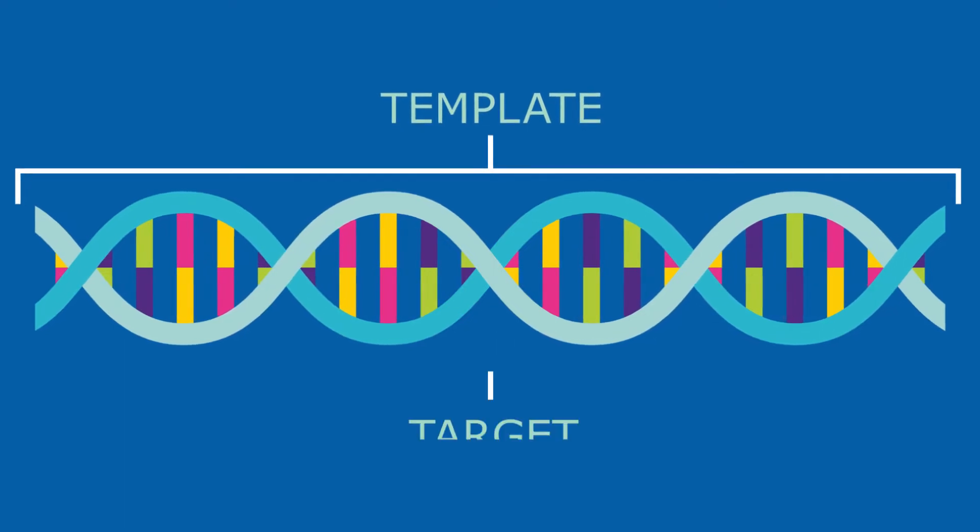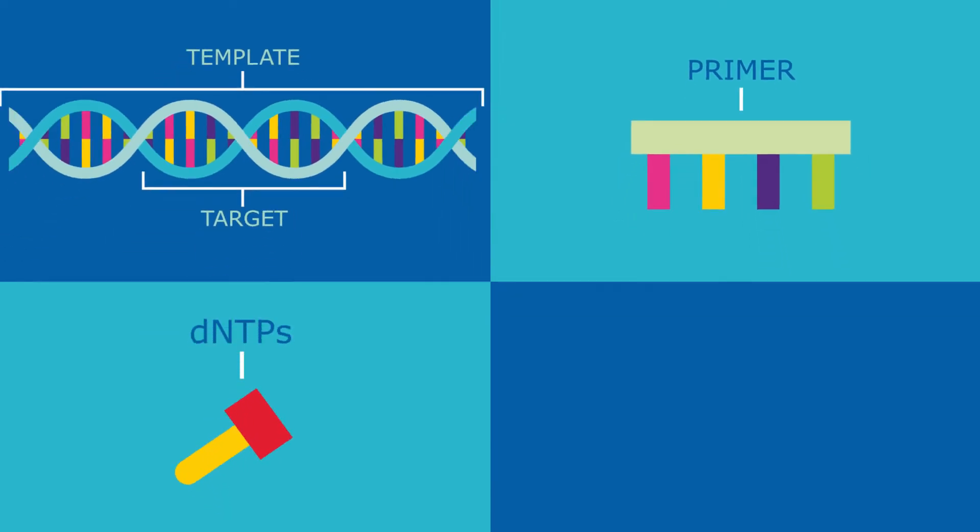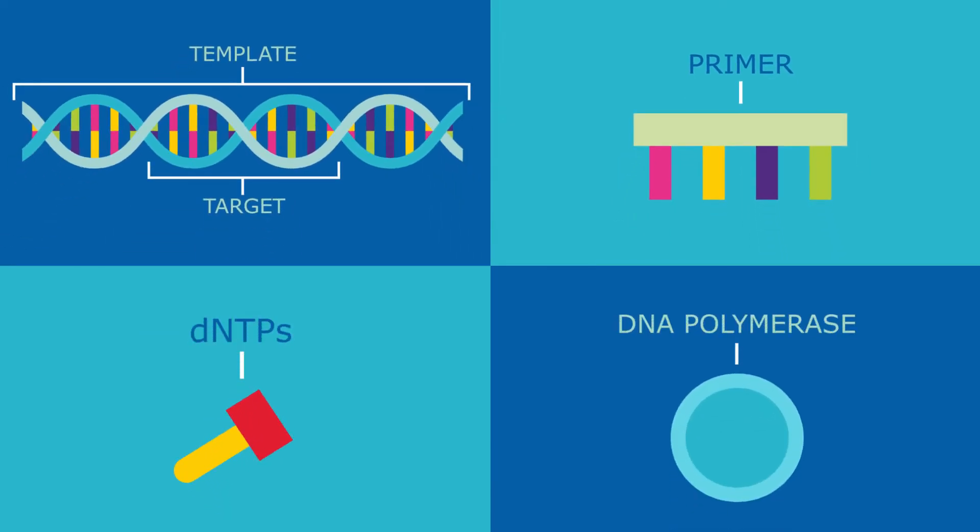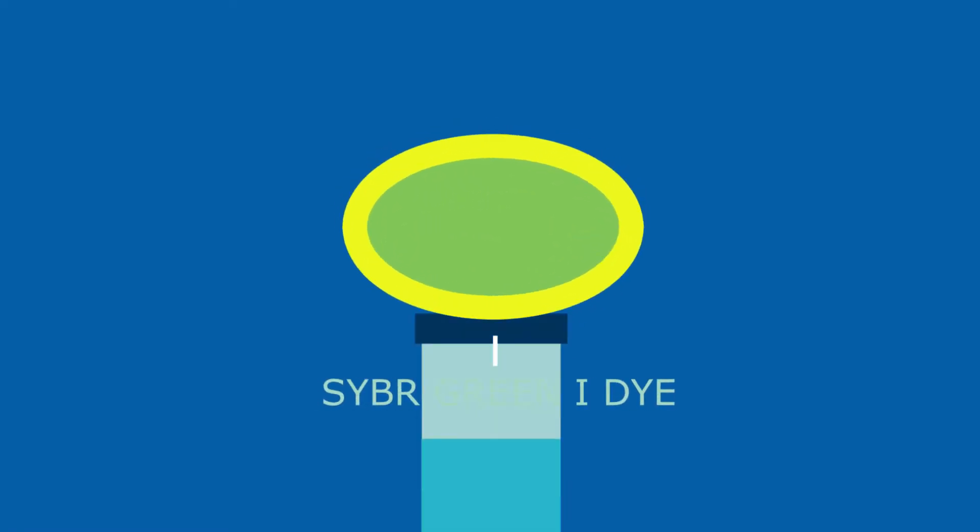In a CyberGreen qPCR reaction, you have your template, which contains the target sequence that you are interested in. You also need primers, DNTPs, and DNA polymerase of your choosing. The CyberGreen 1 dye is typically included in the reaction mix that contains the DNA polymerase.